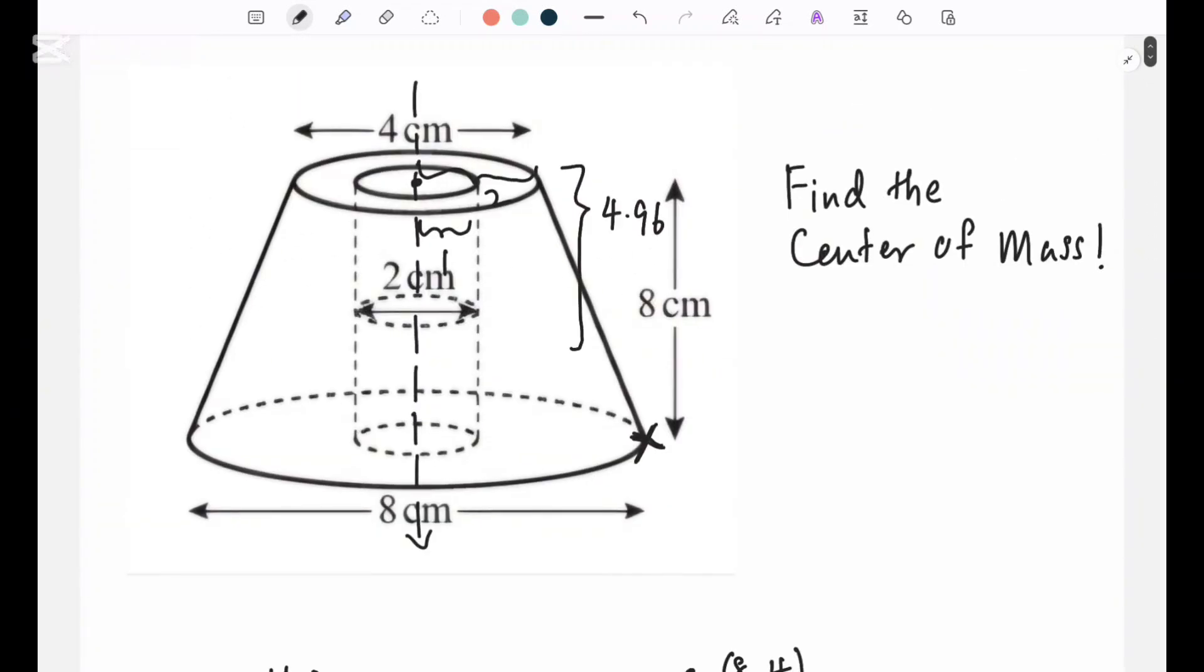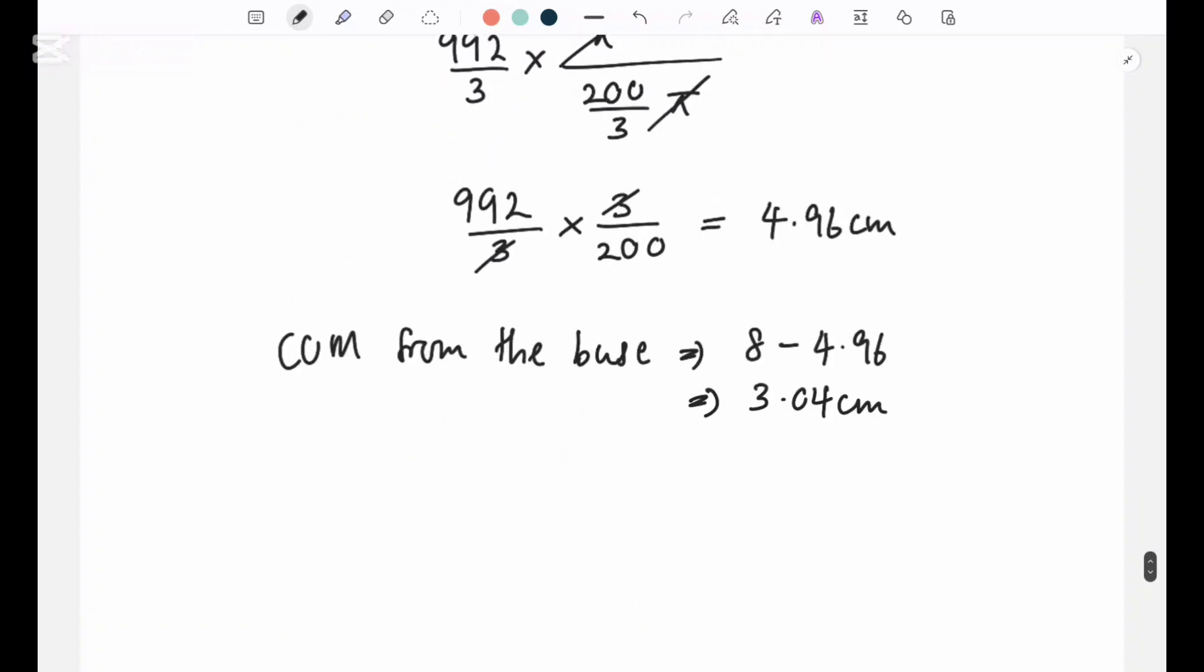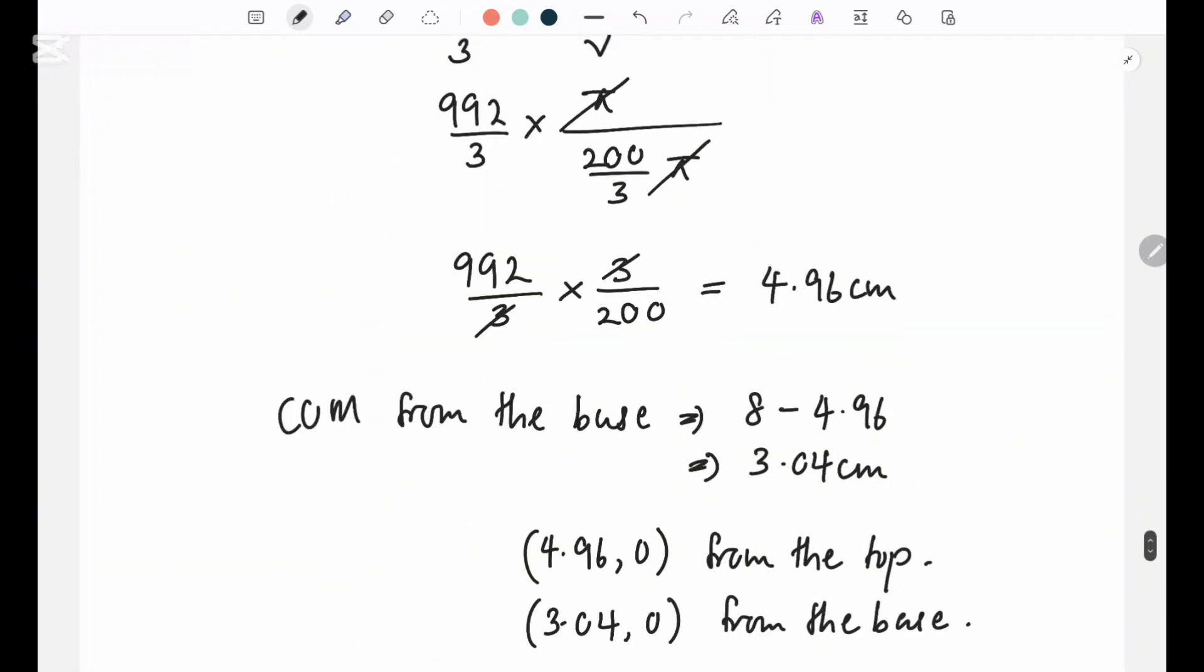So this is the center of mass, but if they ask you the center of mass as a coordinate, since it's perfectly symmetrical you'll only have the center of mass along the vertical. The other center of mass would just be zero because you can see it's perfectly symmetrical. So you can write the answers either 4.96 comma 0 from the top, or 3.04 comma 0 from the base. Those are the answers. I hope you all understood. If you guys have any doubts please drop a comment.